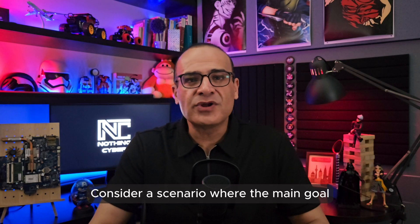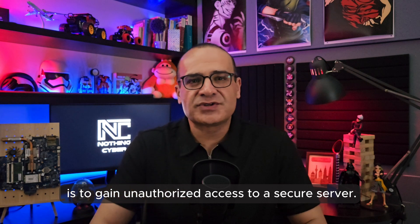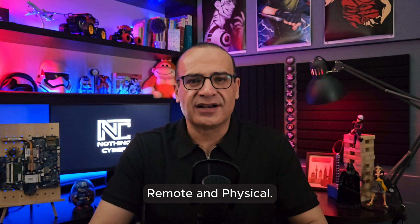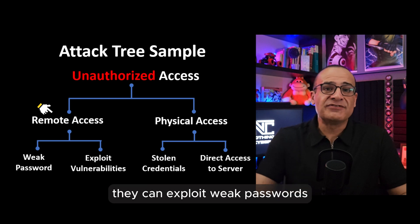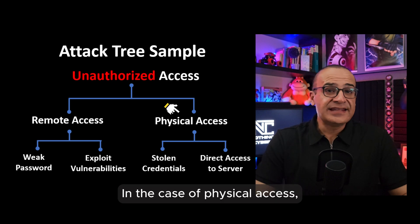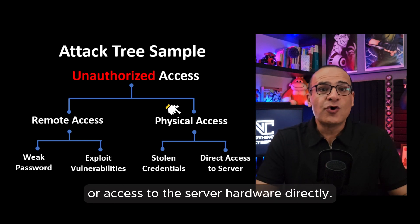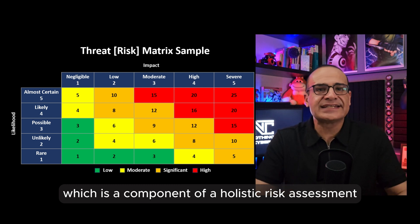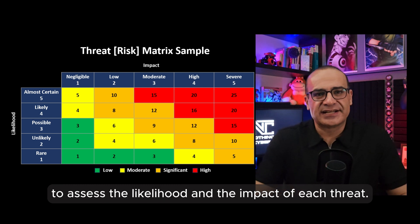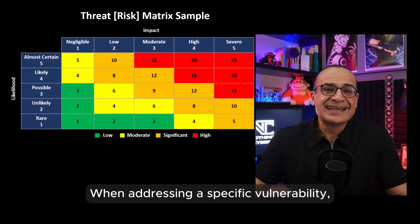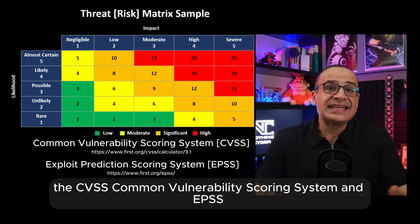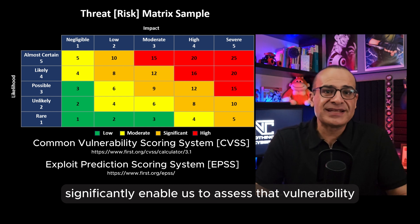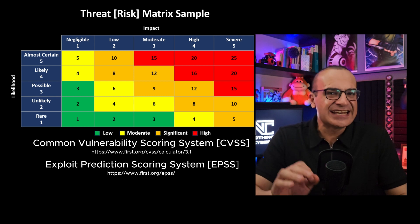Consider a scenario where the main goal is to gain unauthorized access to a secure server. The attack tree outlines two main ways: remote and physical. Under remote access, attackers can exploit weak passwords or security vulnerabilities. In the case of physical access, the attacker may steal credentials or access server hardware directly. We also need a threat matrix — a component of holistic risk assessment — to assess the likelihood and impact of each threat. When addressing a specific vulnerability, CVSS (Common Vulnerability Scoring System) and EPSS (Exploit Prediction Scoring System) significantly help assess vulnerability severity and the likelihood of exploitation in real-world scenarios.